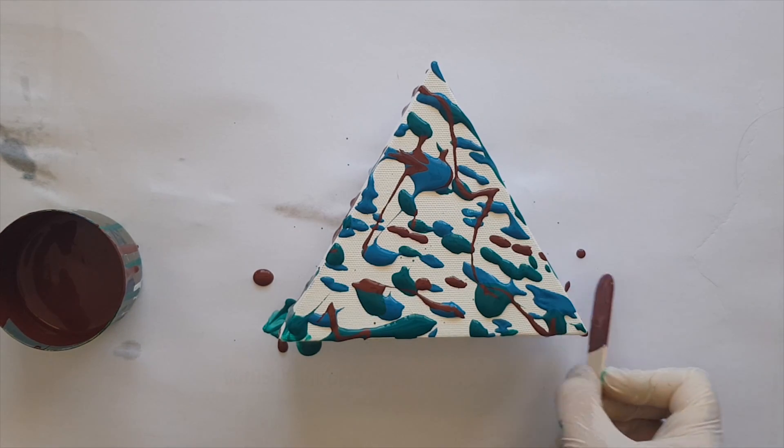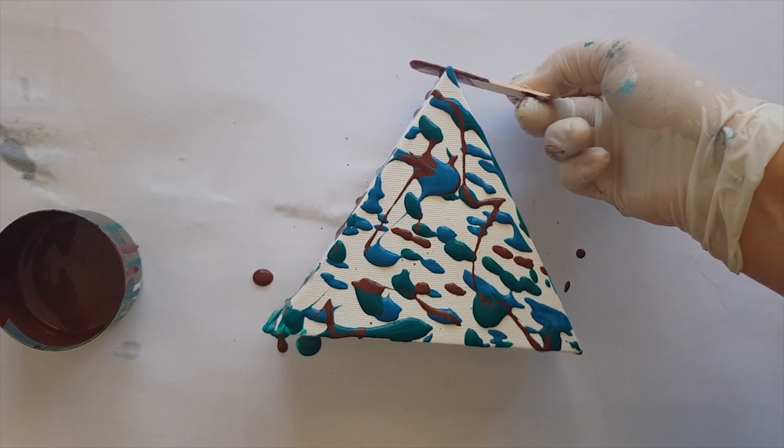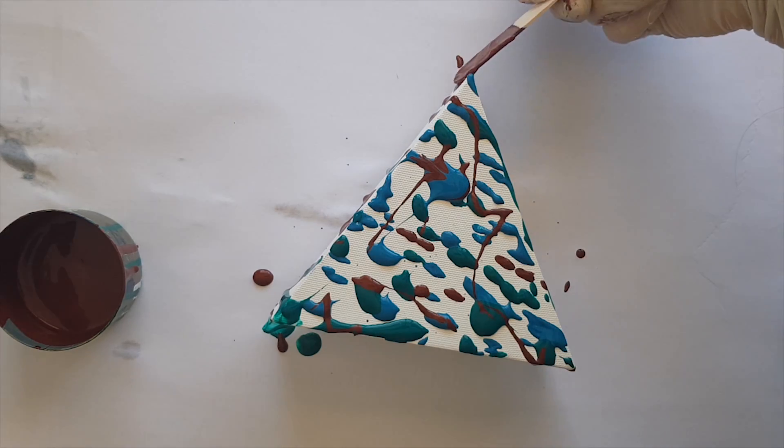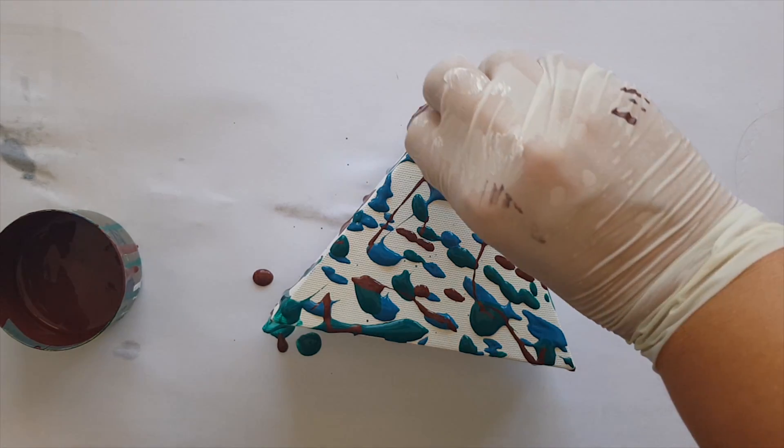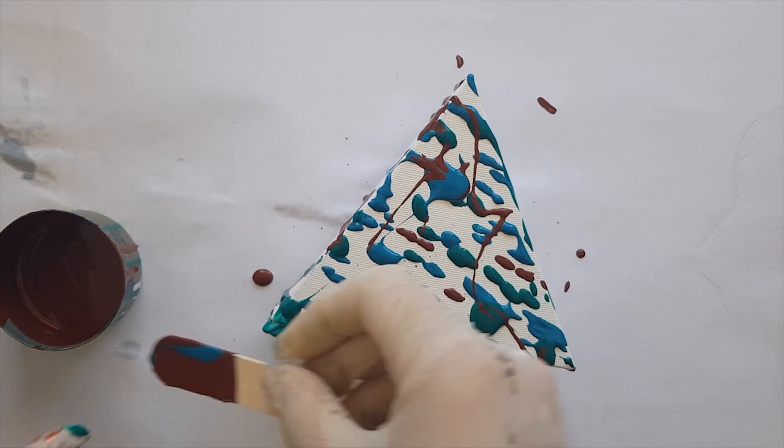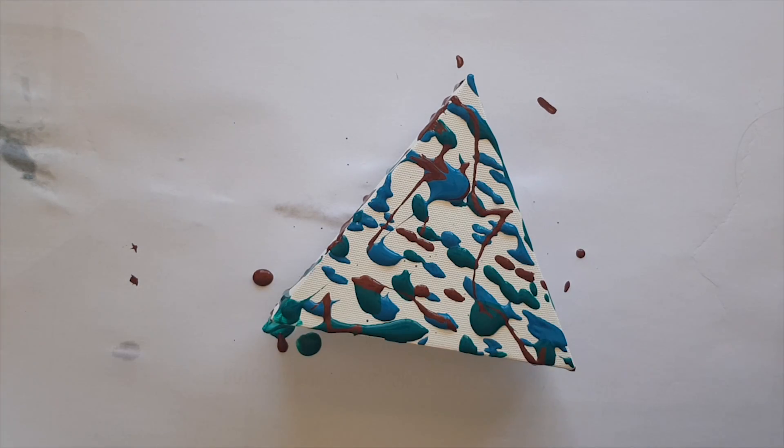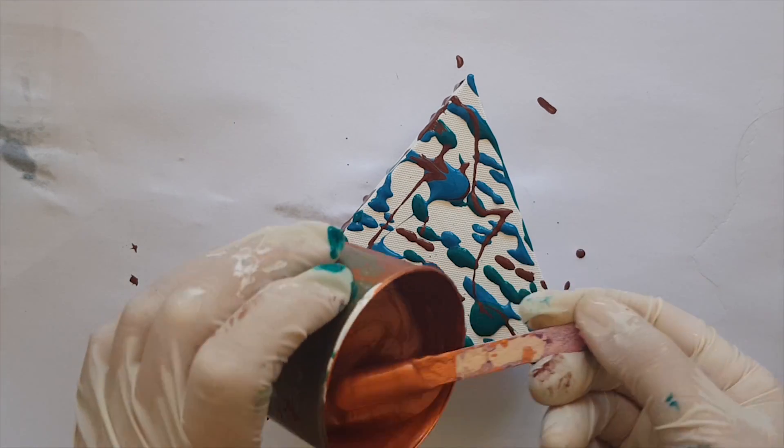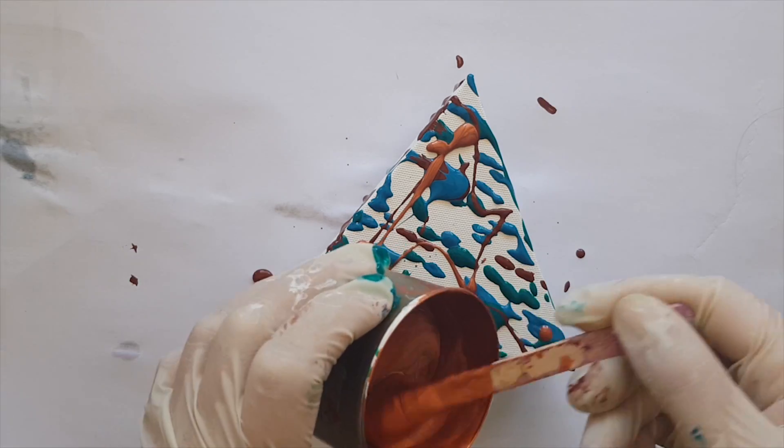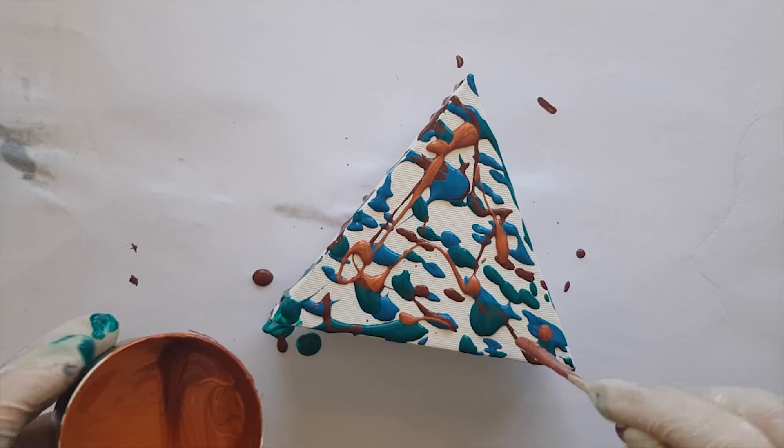One thing I do when I dib dib dab is I make sure that all the corners are dib dib dabbed. And that way, whatever happens, the corners are covered. Now I do like my copper if you haven't noticed.